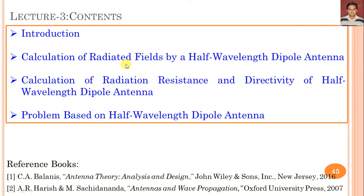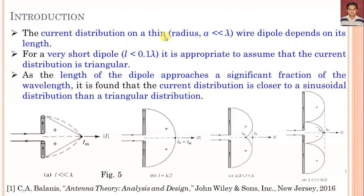During this analysis, we have also calculated the radiated field by a finite length dipole antenna. Introduction: the current distribution on a thin wire having radius a less than lambda depends on its length, as previously discussed. For a very short dipole as considered in lecture 2, L equal to 0.1 lambda or lambda by 10, it is appropriate to assume the current distribution is triangular.